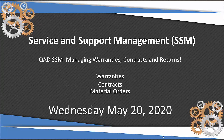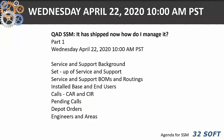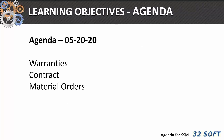As Denise mentioned, Nancy is with us today so we are going to try to cut my session a little bit short. In April on the 22nd we covered the background of service support — how to set it up, bills and routings, install base, calls, CAR, SIR, pending orders, depot orders, engineers and areas. Today we want to talk about warranties and contracts, and we'll try to get into material orders. If we don't have time, we'll have a third section of service and support in September.